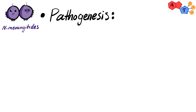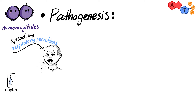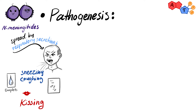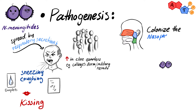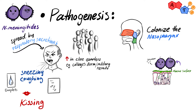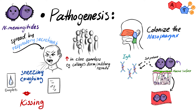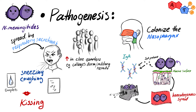Now let's discuss the pathogenesis. First, it spreads by respiratory secretions like droplets from sneezing, coughing, or kissing. It spreads more easily in crowds and close quarters, like college dorm residents or military recruits. Neisseria meningitidis colonizes the nasopharynx first, using pili to attach to the mucosal surface and IgA protease to escape IgA antibodies. Then it spreads hematogenously through the blood, while using its polysaccharide capsule to protect itself from phagocytosis.